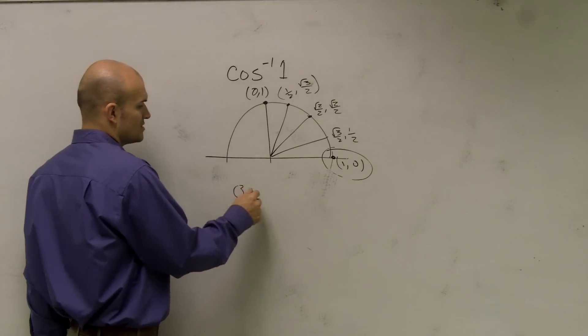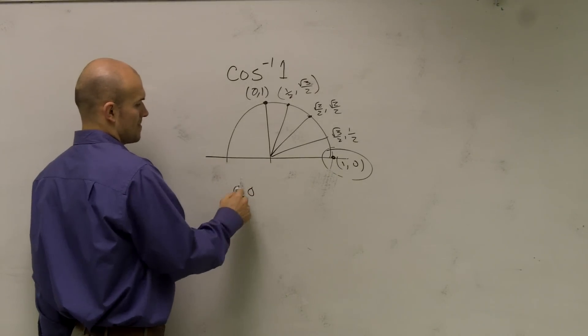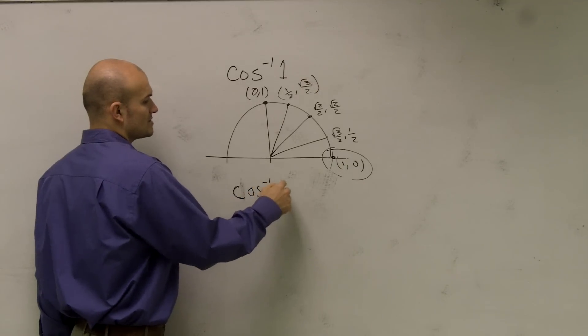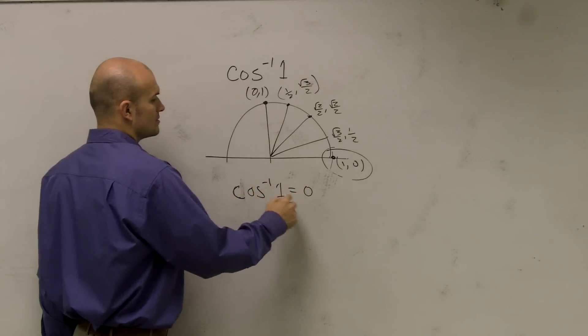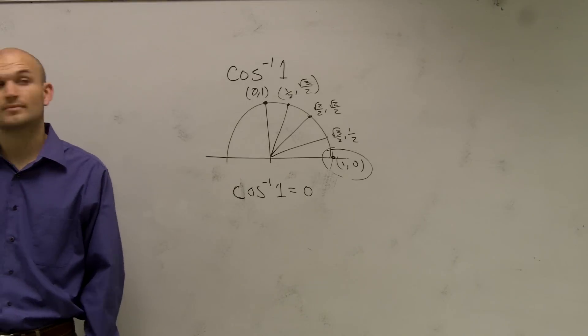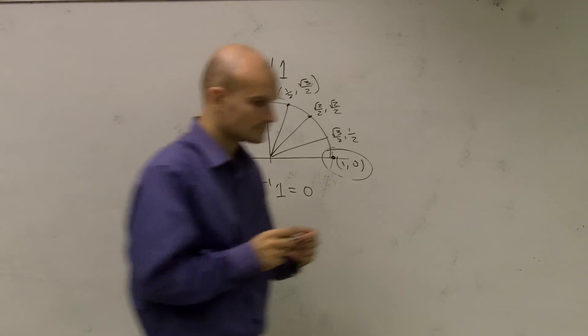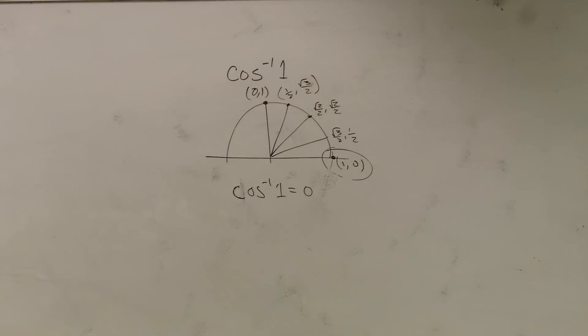So therefore, inverse cosine of 1 equals 0. And that's how I get the answer. Okay? Make sense?